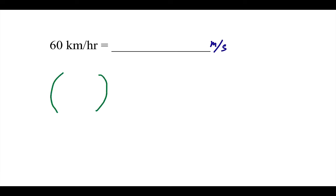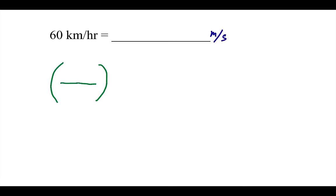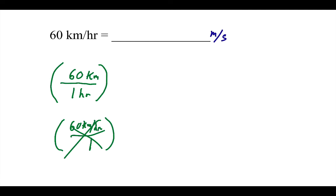60 kilometers per hour is already its own fraction — 60 kilometers over one hour. Don't write 60 kilometers per hour over one; that is not correct. It's 60 kilometers over one hour; it's already a fraction. There are two conversions I have to make: kilometers into meters and hours into seconds. I'll start with kilometers — I want kilometers on the bottom to cancel, and meters on the top. One kilometer is 1,000 meters. That cancels my kilometers and meters are left, which is what I want.